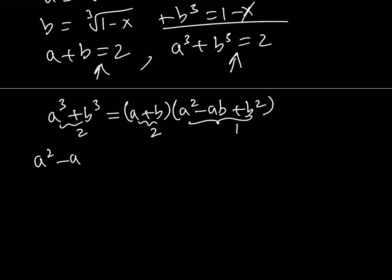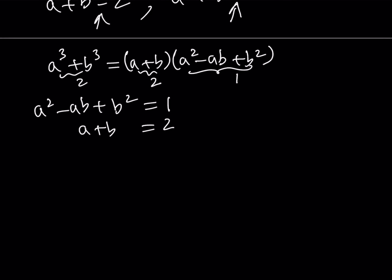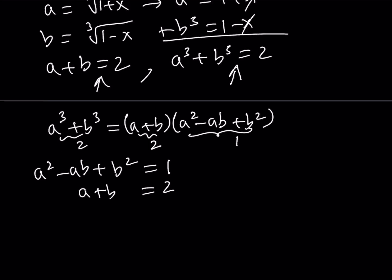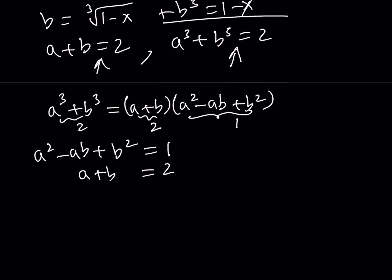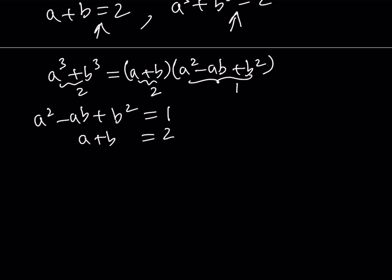So, now I have A² minus AB plus B² is equal to 1. And I also know that A plus B is equal to 2. So, this makes another system that we can solve. It's easier because it's quadratic. There are kind of two ways to go about it.